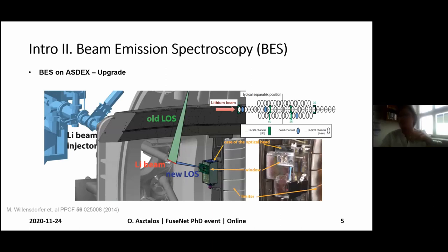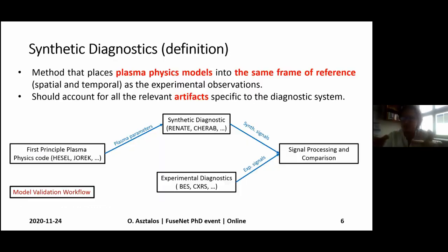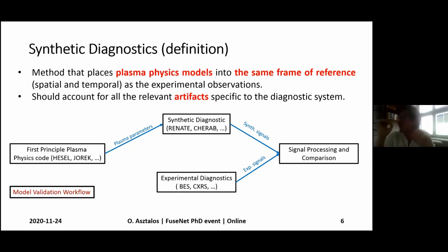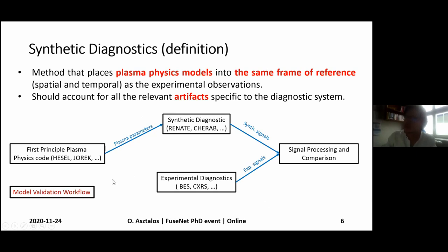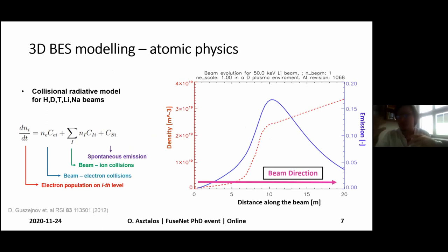So this is what I've been modeling, and to do that, I would like to define first what I think a synthetic diagnostic is — it's a method that actually takes plasma physics models into the same frame of reference as actual measurements, and it should account for all the relevant artifacts beholden to certain diagnostics. I think that first-principle plasma physics code validation should always have a synthetic diagnostic attached.